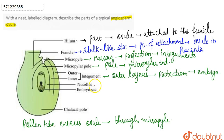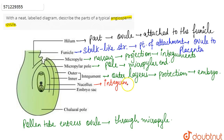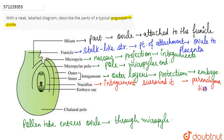The next part is the nucellus. The nucellus is a mass of parenchymatous tissue. Integuments surround the nucellus, and it is made up of parenchymatous tissue.